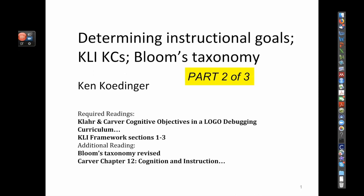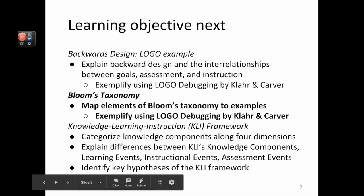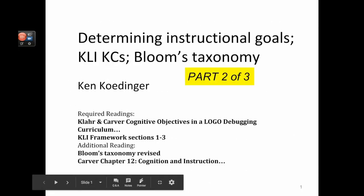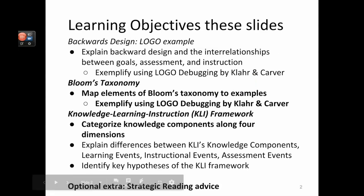In this part two of three, we pursue the next learning objectives in our sequence. They are Bloom's Taxonomy and the Knowledge Learning and Instruction Framework, categorized knowledge components along four dimensions. At the end of this deck are some extra slides about strategic reading advice.